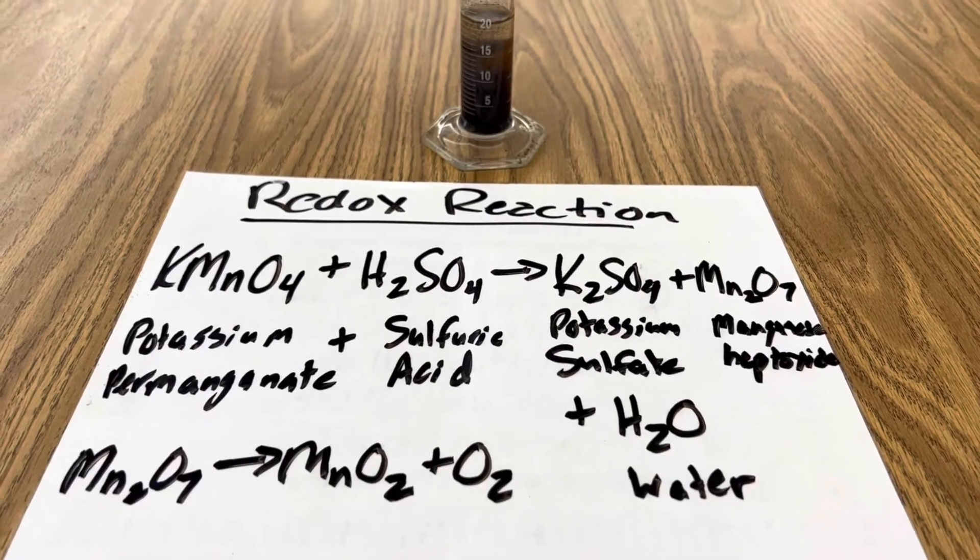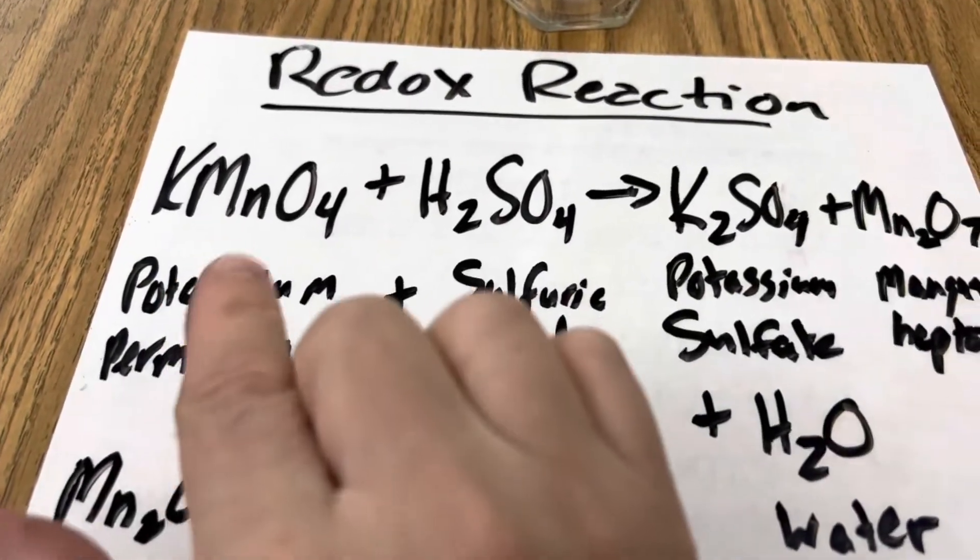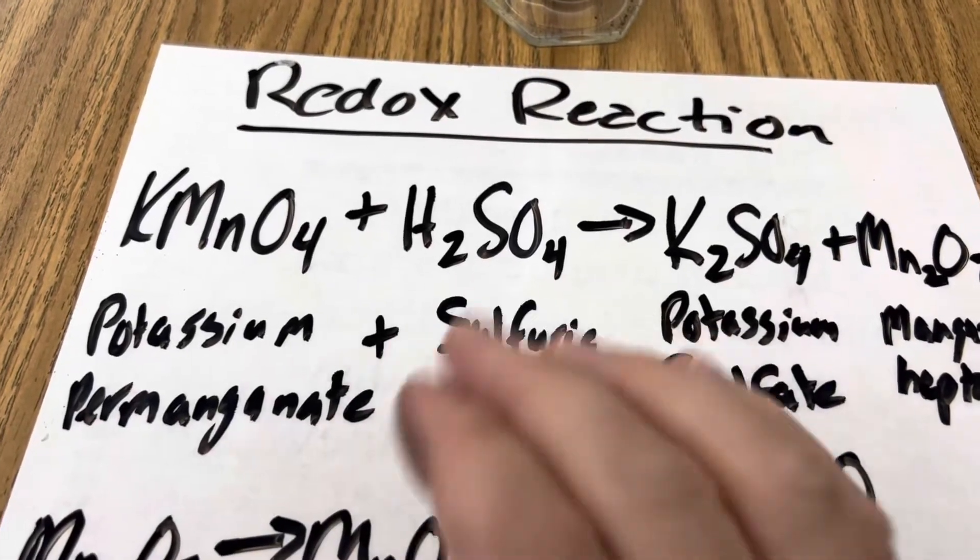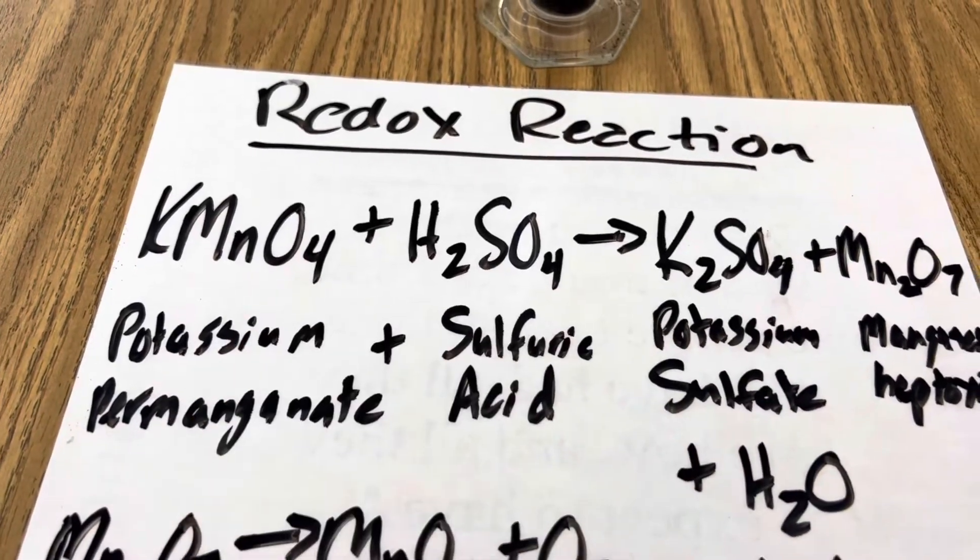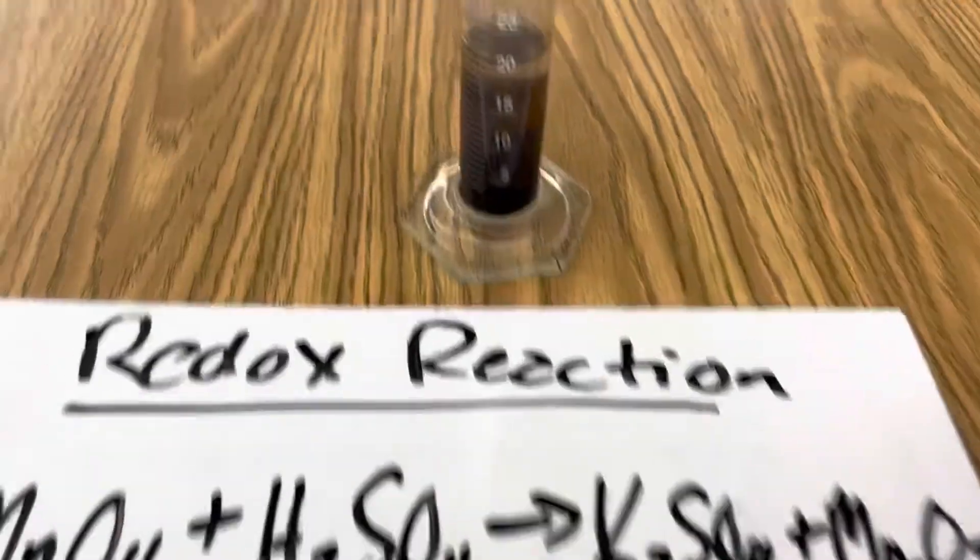So what's going on in this redox reaction is you're starting out with your potassium permanganate, that's your KMnO4, and your sulfuric acid, your H2SO4. These are your reactants, and that's changing into potassium sulfate and manganese heptoxide.